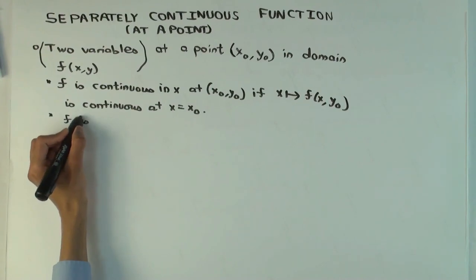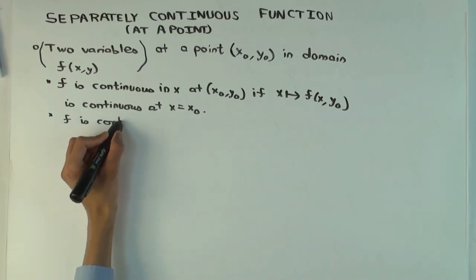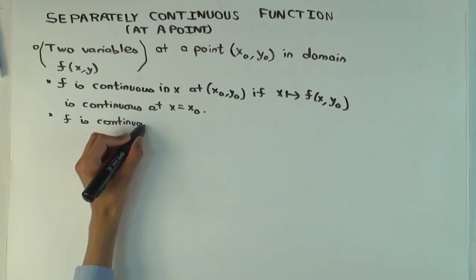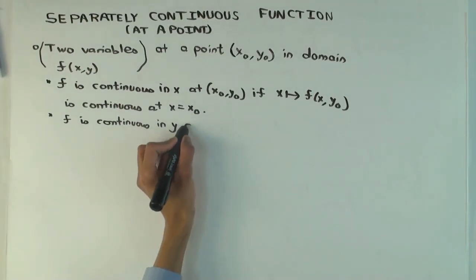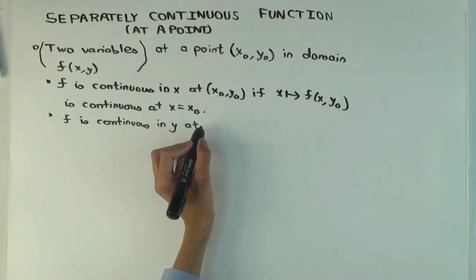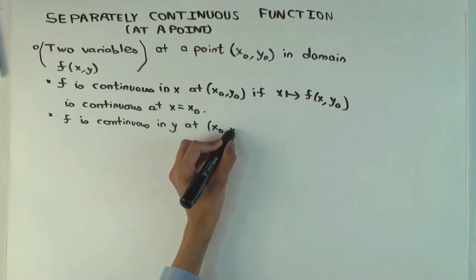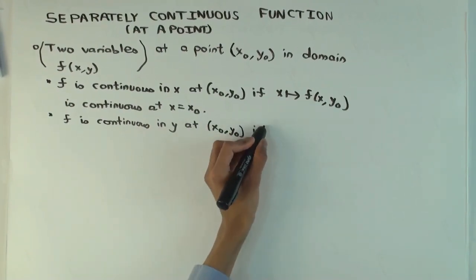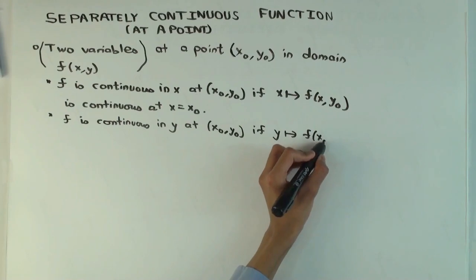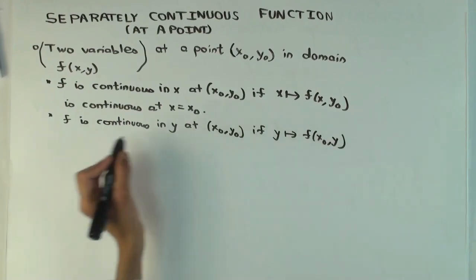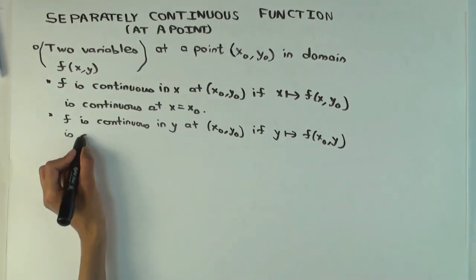f is continuous in y at x0, y0 if—what is continuous? The function which sends y to f(x0, y) at y equals y0. If this function is continuous at y equals y0.